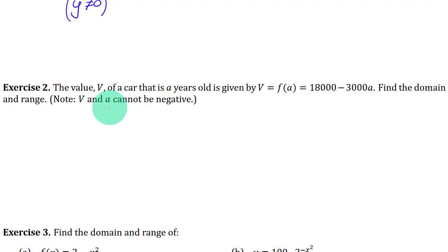And a can't be negative because that would be like if it's negative five years old that would mean five years before it was bought when maybe the car didn't exist yet. So a cannot be negative means that basically describes the domain.